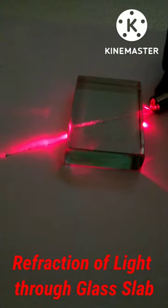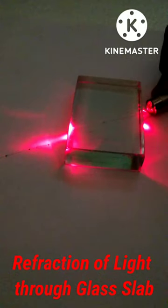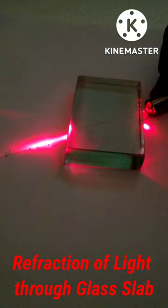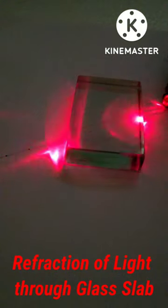Since ray goes from glass medium to air, it again gets refracted and bends away from normal. The incident ray and the emergent ray are parallel to each other.